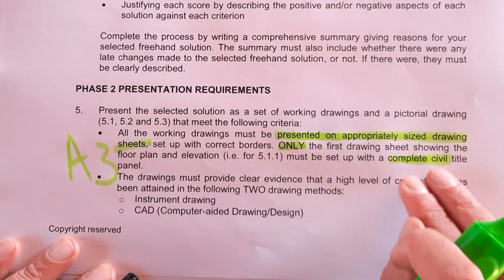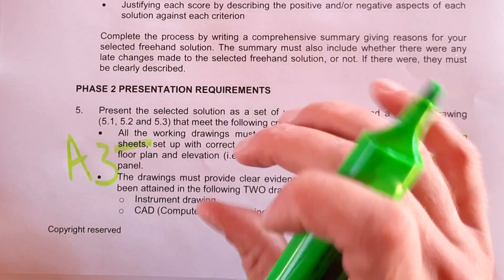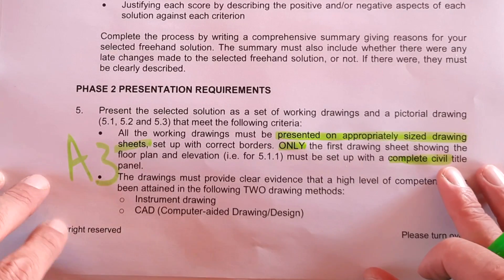So only your floor plan needs that. The rest of them just the border with your name, page number, title of the drawing and the date.